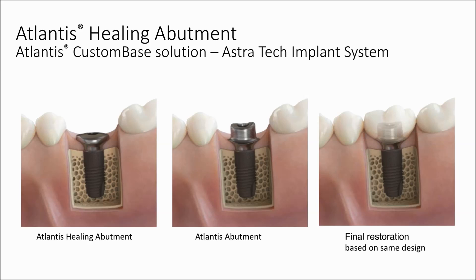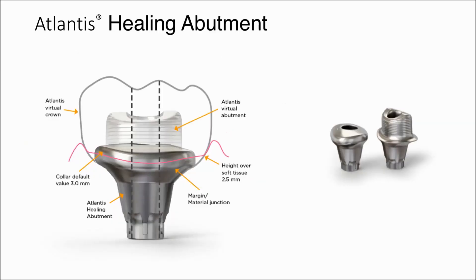So at the time of surgery, I can place a custom healing abutment with a predefined shape and allow my tissue to start healing to that exact same shape. Once the tissue is healed, I'll be able to remove that custom healing abutment and have an Atlantis abutment that follows the exact same contours, and then I'll be able to either manufacture through my CEREC a crown or have a laboratory do that for me. The crown is going to be designed, and then the final abutment will have a design whose emergence follows the exact same emergence and contours of the custom healing abutment.